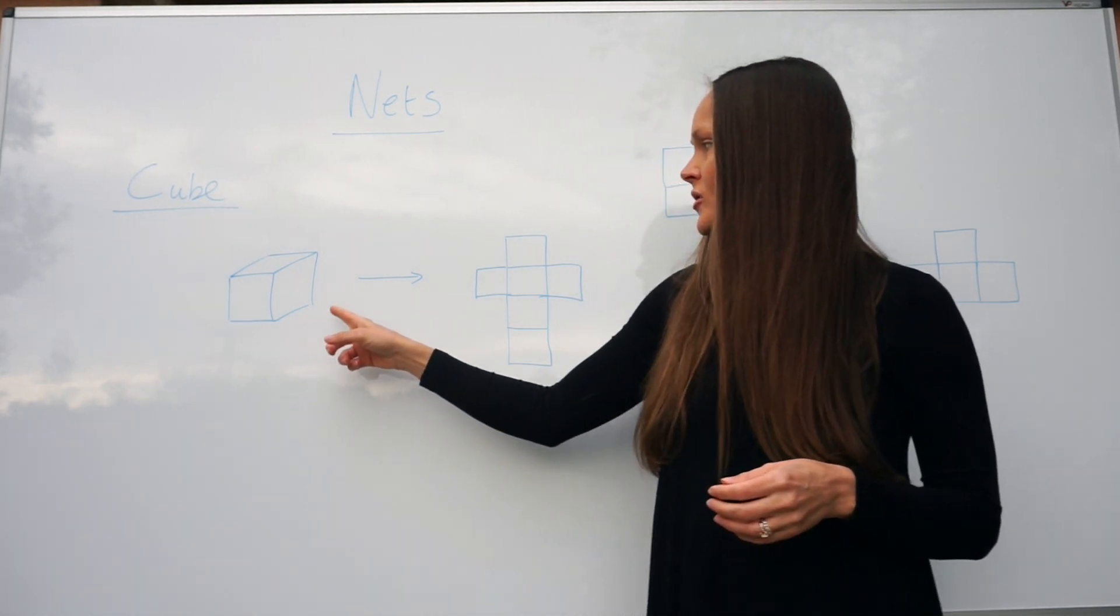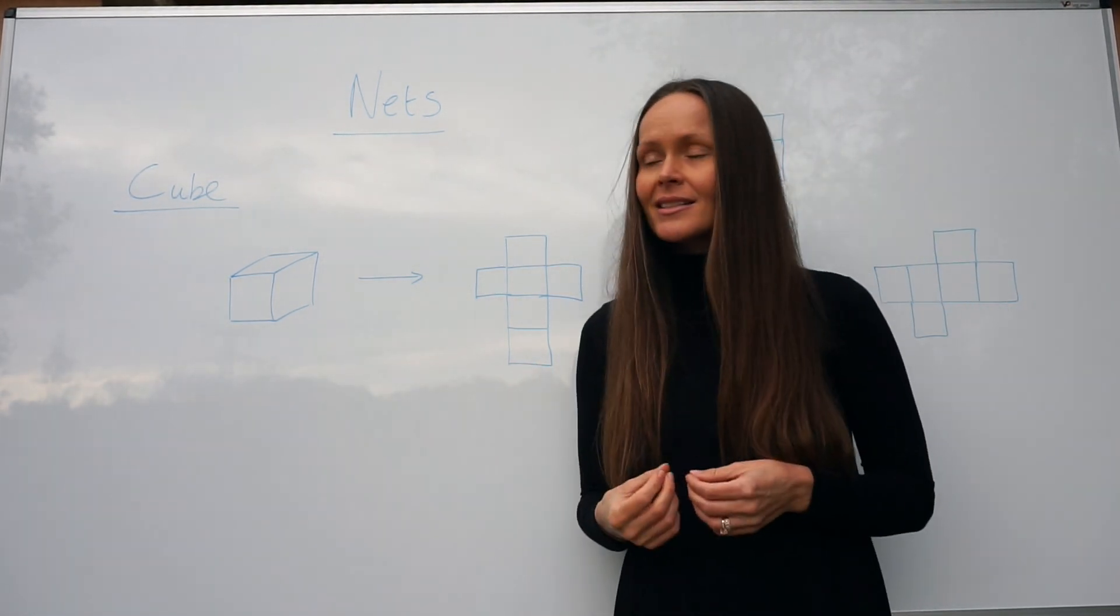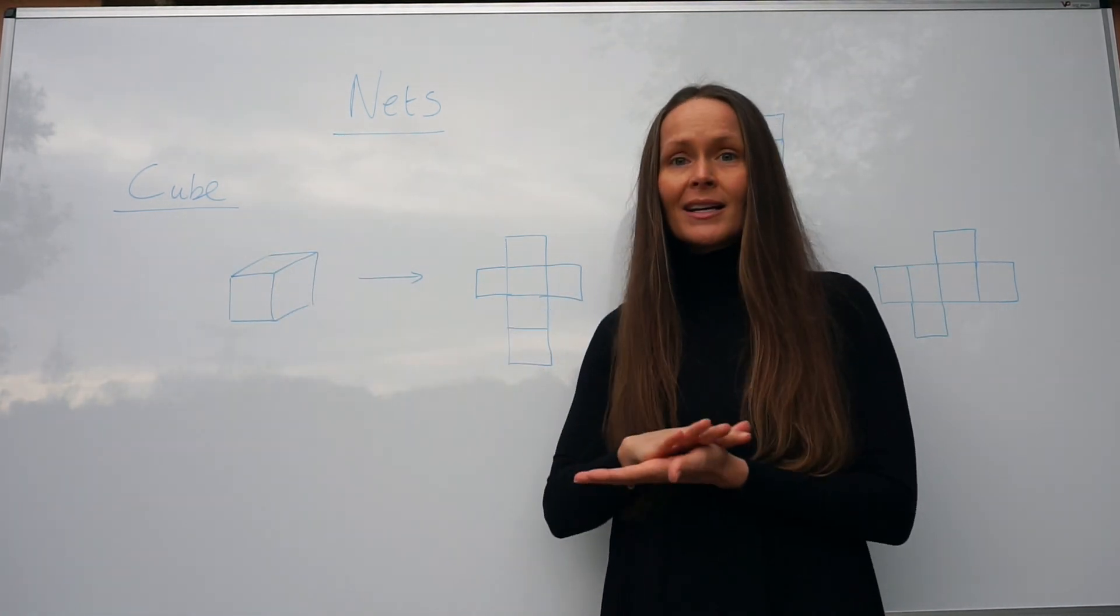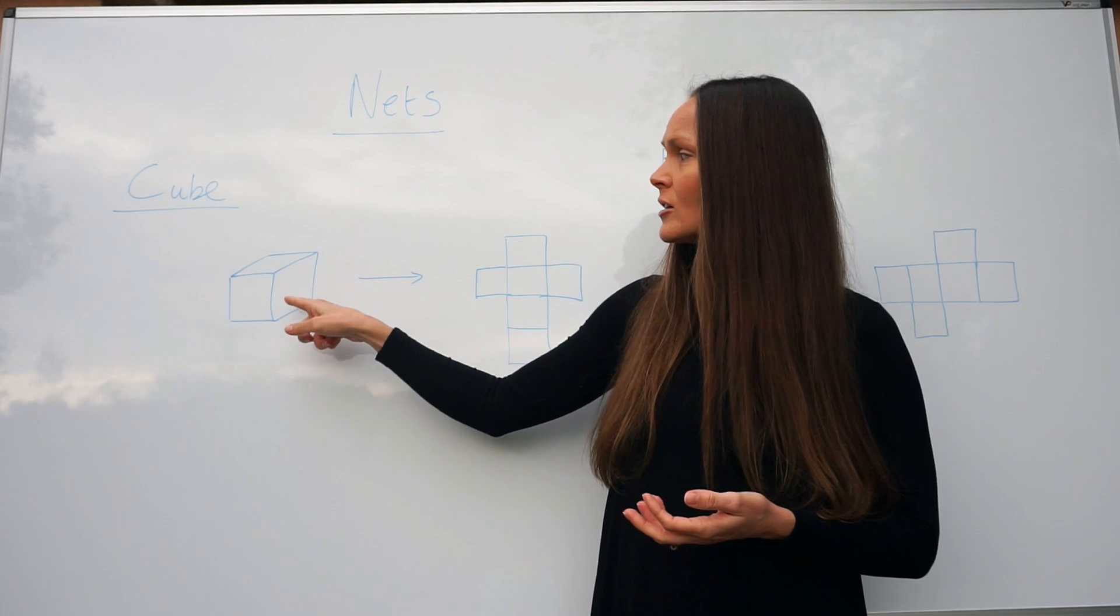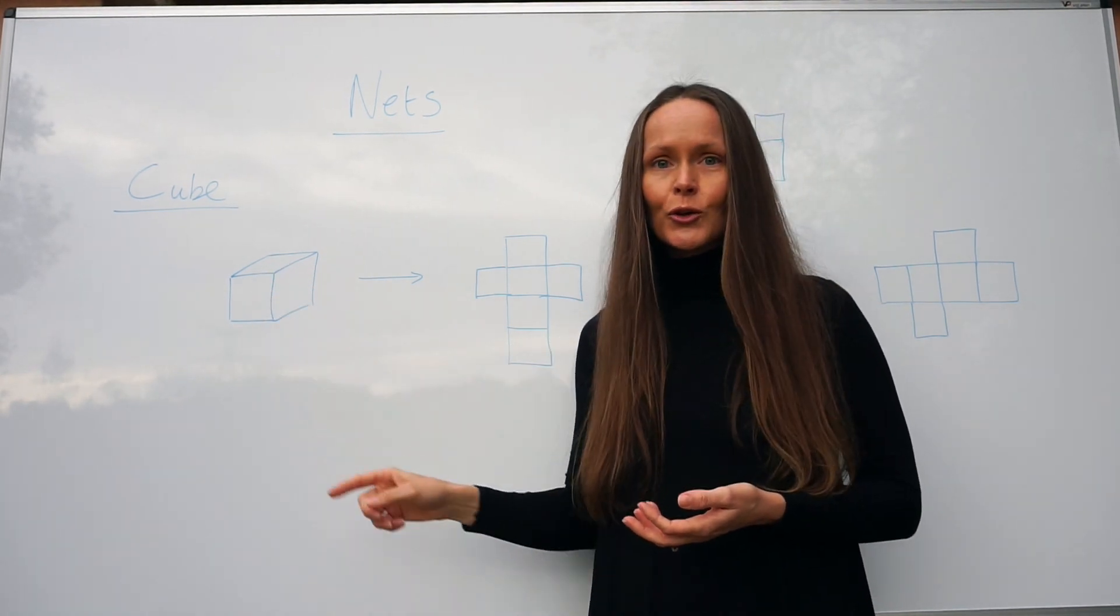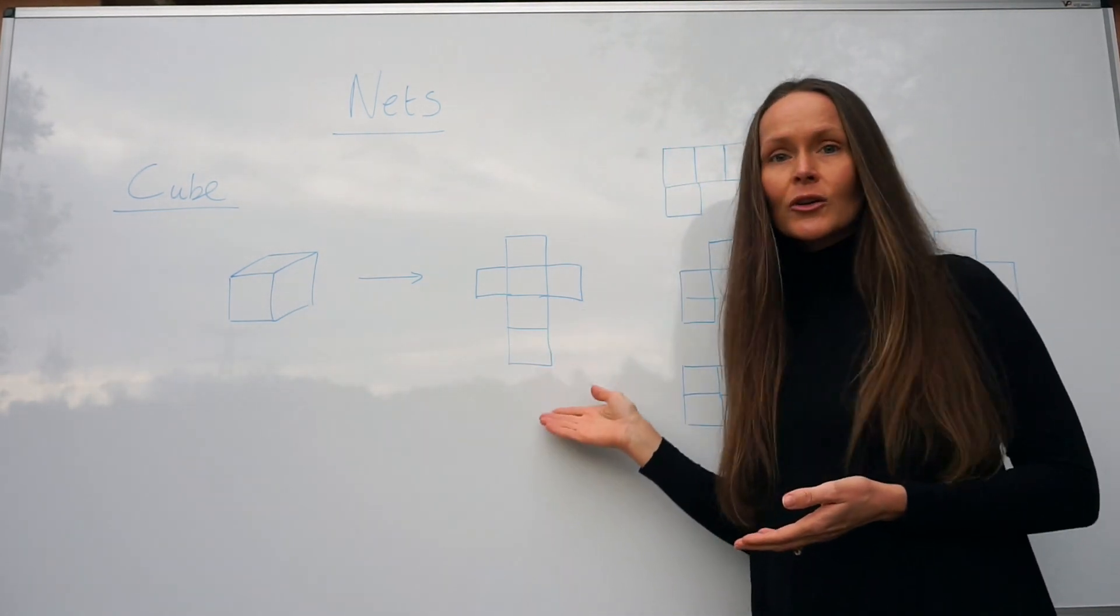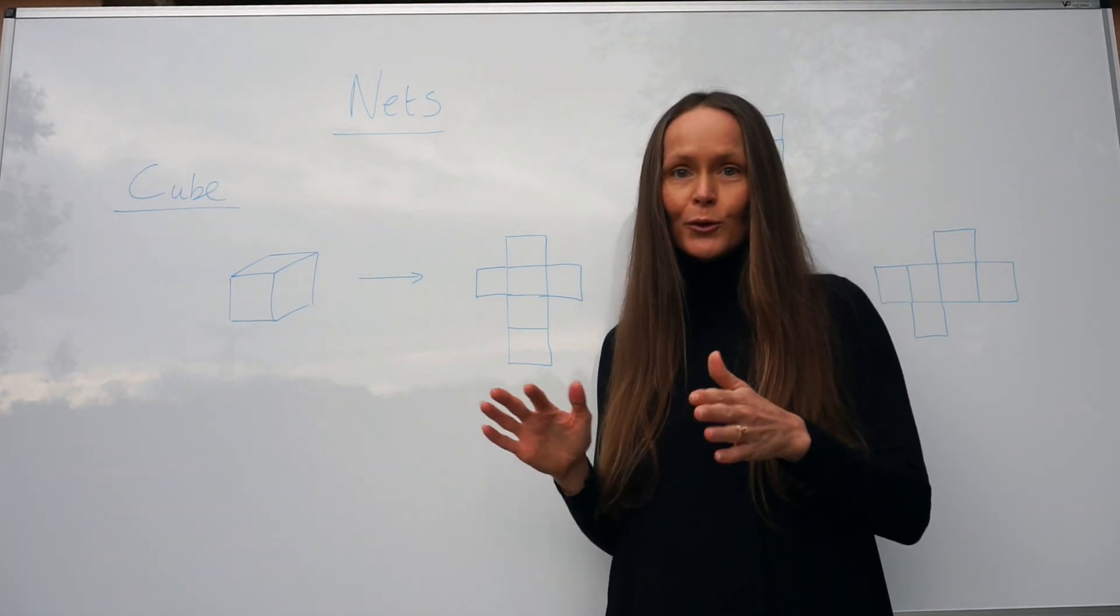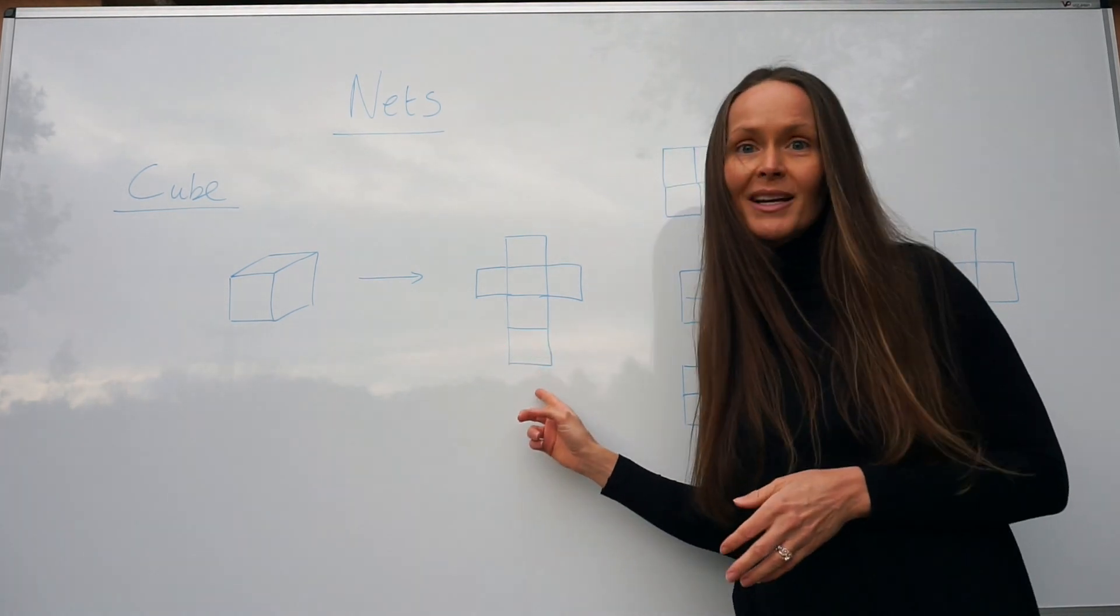Afterwards I've drawn an example of a net. So a net is this shape flattened out. If you were to cut along some of the edges of a cube and lay it out flat, it could end up looking like this. You've probably seen a cardboard box before you folded it; it would look something like this net.